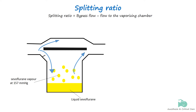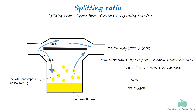For instance, if we send 50 percent into the vaporizing chamber and 50 percent through the bypass channel, we can halve the resultant concentration of sevoflurane in the gas flow. This is because we only saturate half of the total gas with sevoflurane. Our resultant concentration is half the SVP, or 11 percent.